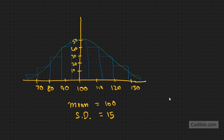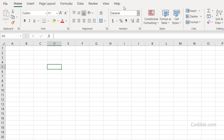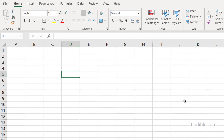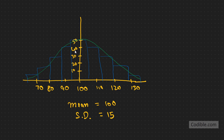With that, we can calculate some interesting information in Excel. One thing we can try is to calculate the proportion of times the supermarket has sold less than 100 cartons of milk. Intuitively, that equals the area of this curve to the left of 100 — this region here.